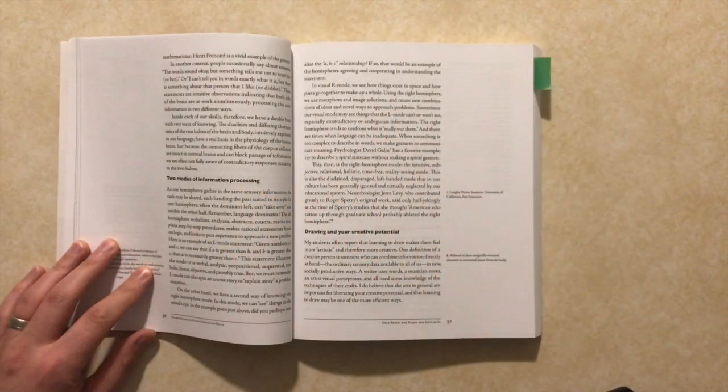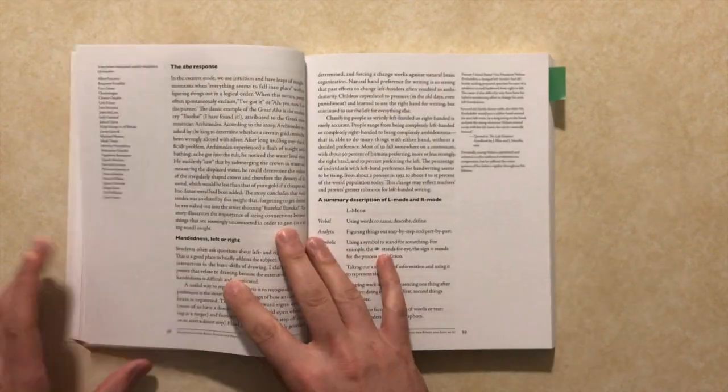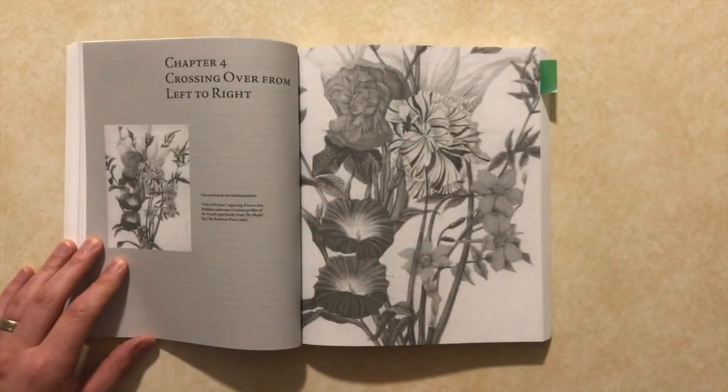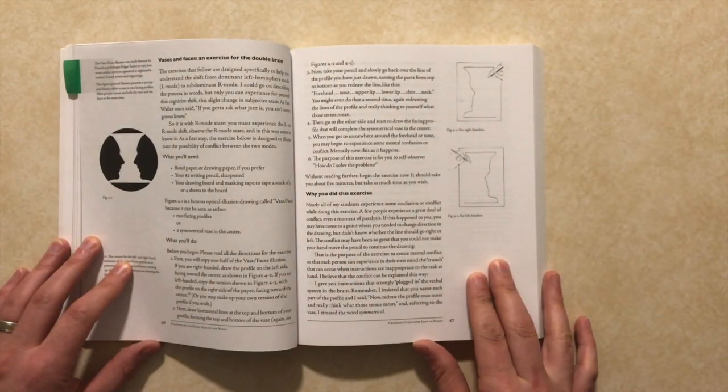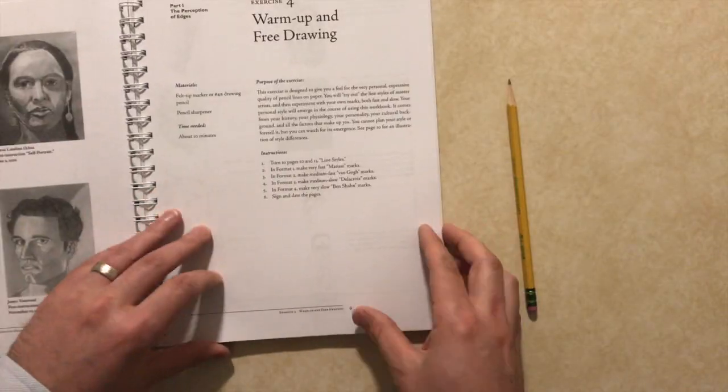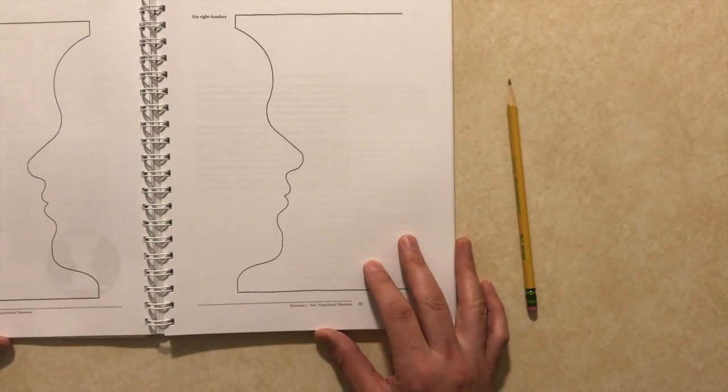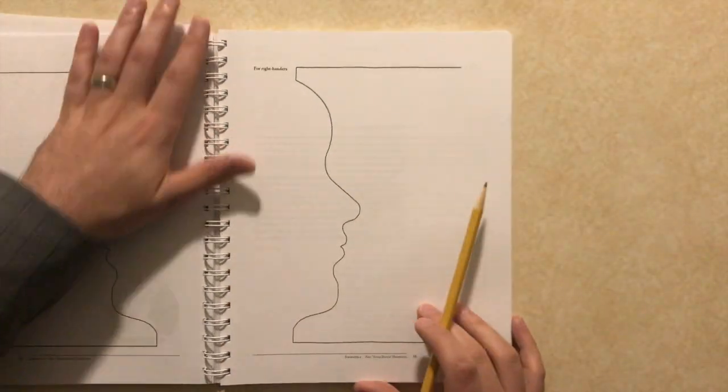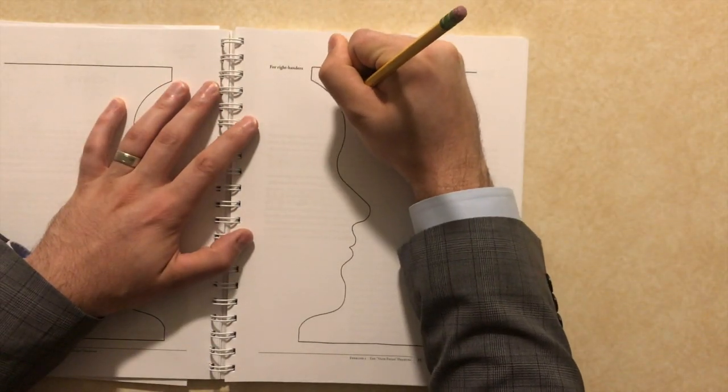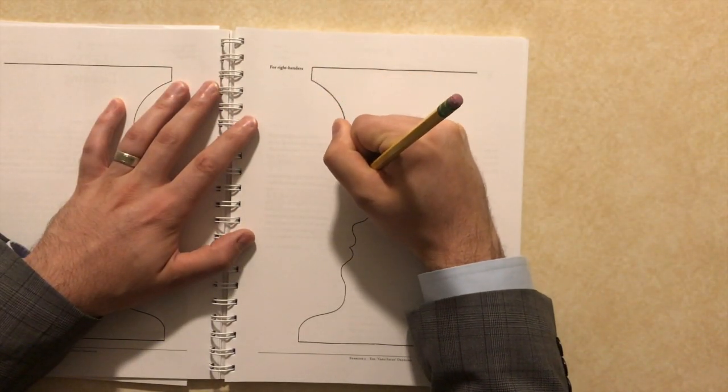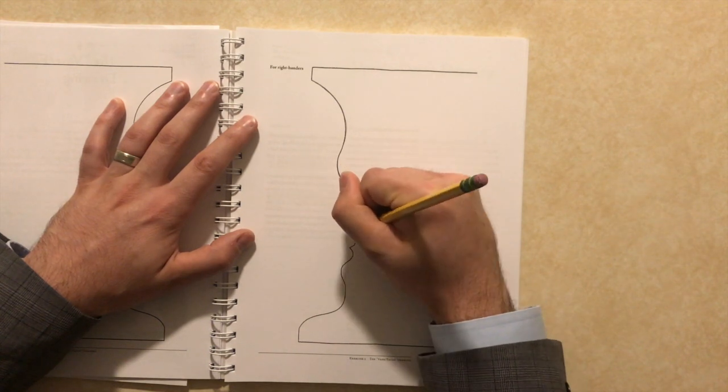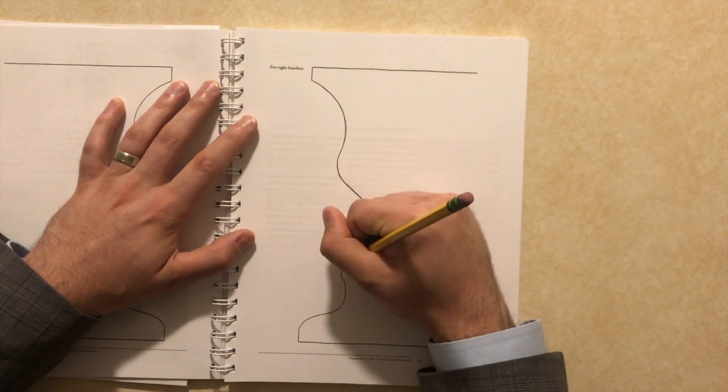In the early chapters she talks about this whole theory of the right and left side of the brain and how one side of the brain we don't access as much, and that's the side that we need to be able to accurately draw something. So she has these exercises to try and force us to see the confusion we have when we use the left side of the brain instead of the right side for drawing.